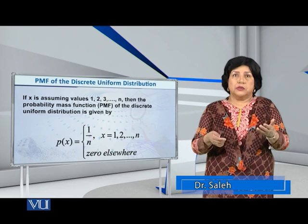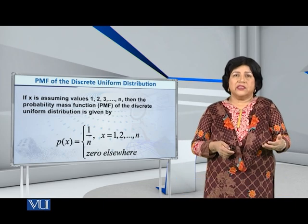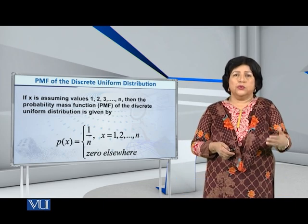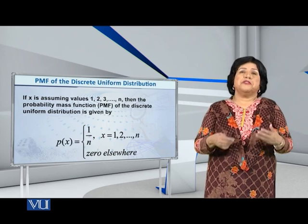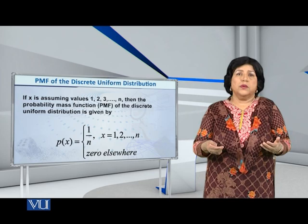p of x is equal to 1 over n, where x is equal to 1, 2, and so on, up to n, and p of x is equal to 0 elsewhere.